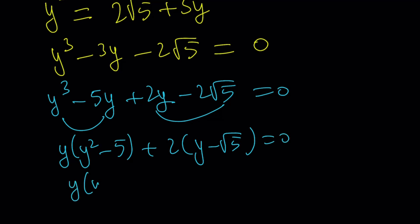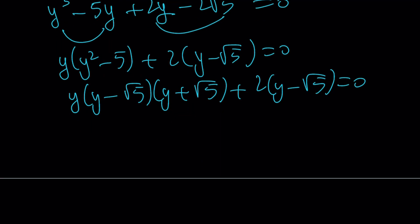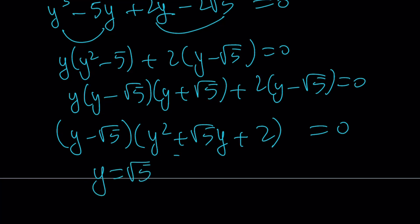From here, you get y times y minus root 5 times y plus root 5 plus 2 times y minus root 5. And if you take out a y minus root 5, you're going to realize y equals root 5 is a solution. And the other solution is probably complex, non-real. So, from here, I get y equals square root of 5. Like I said, it is hard to see.